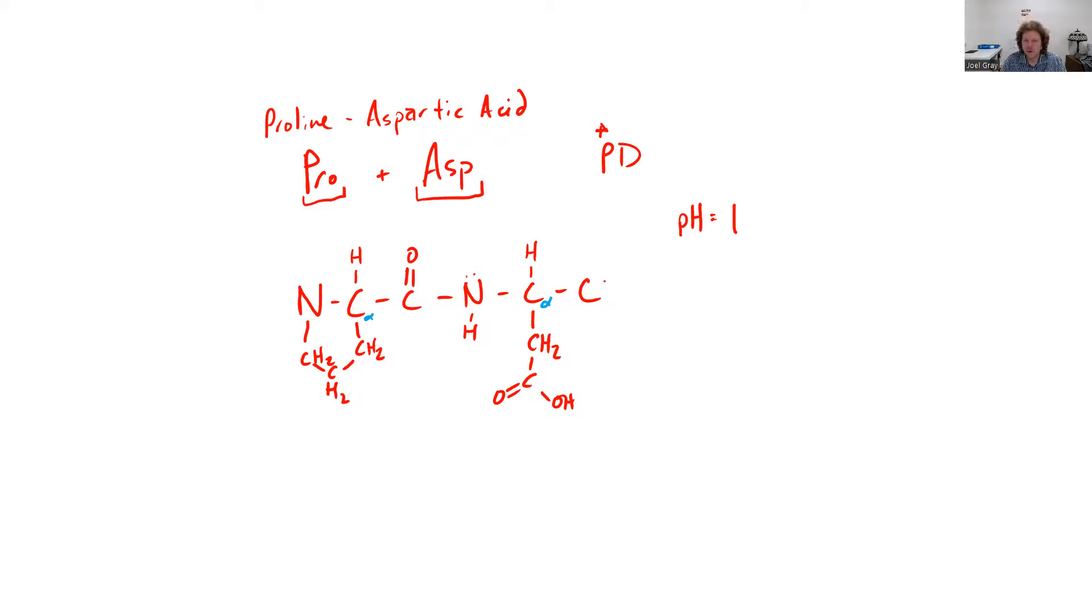Now I'm going to go on to my C-terminal carboxylic acid. That's going to look like this. Remember, this is drawn at a pH of 1. The last thing I need to work on is my N-terminal for my proline. What I notice about that N-terminal is I already have two bonds to it. This is going to be fully protonated. Therefore, it's going to have two hydrogens and a positive charge, because those two hydrogens will give me an overall positive charge.